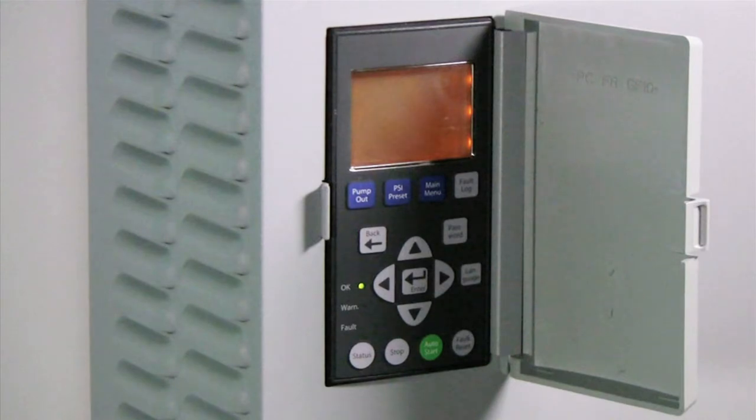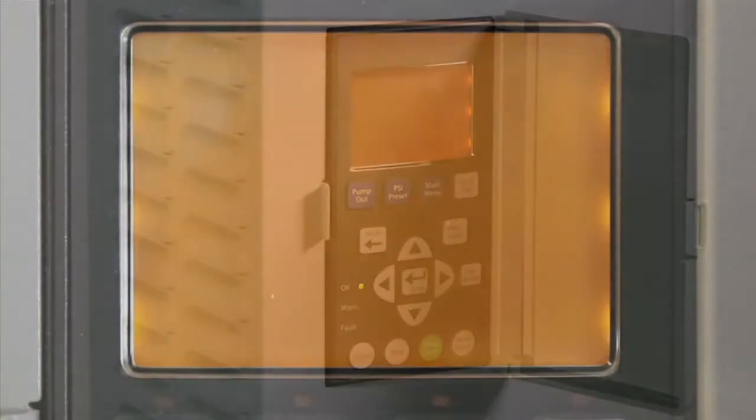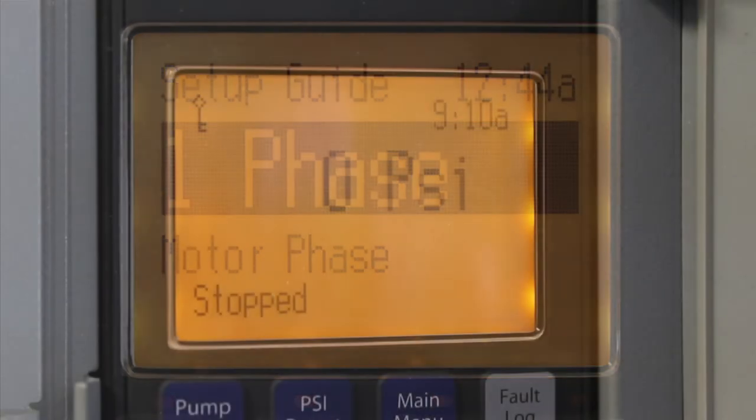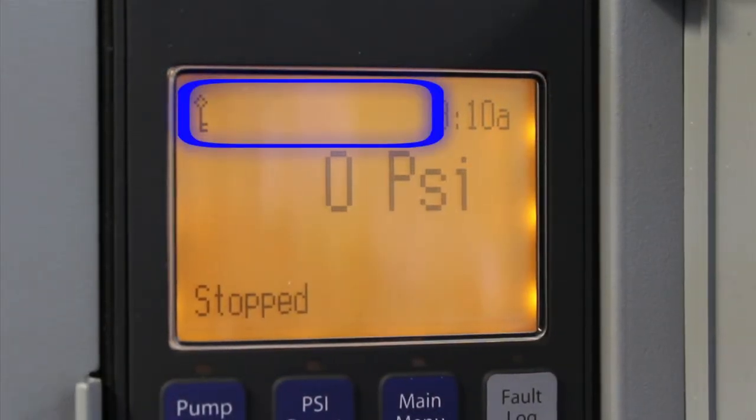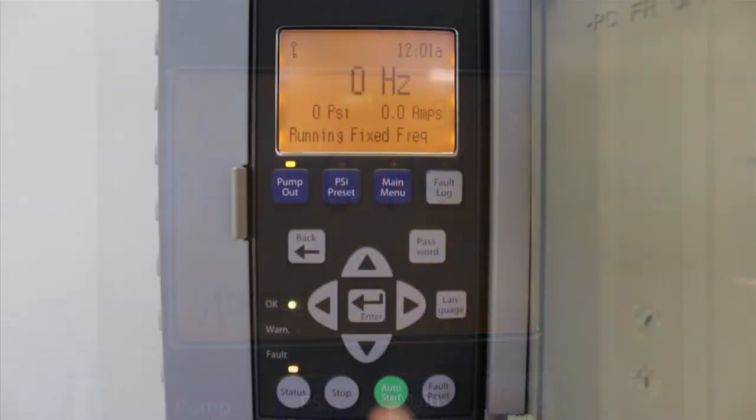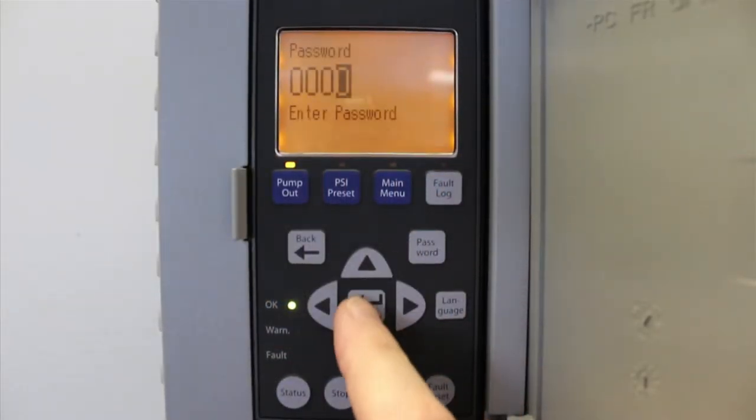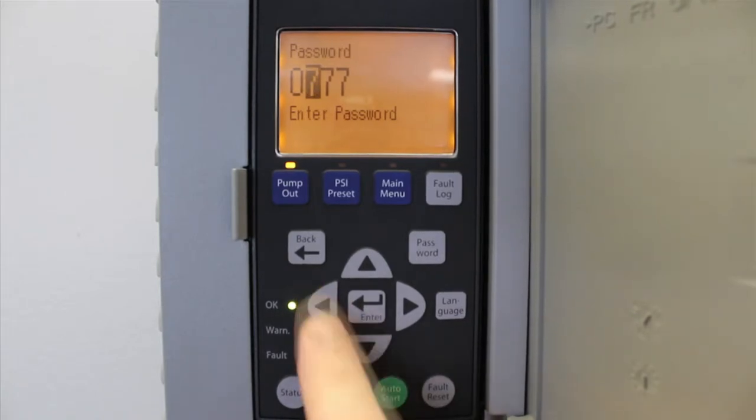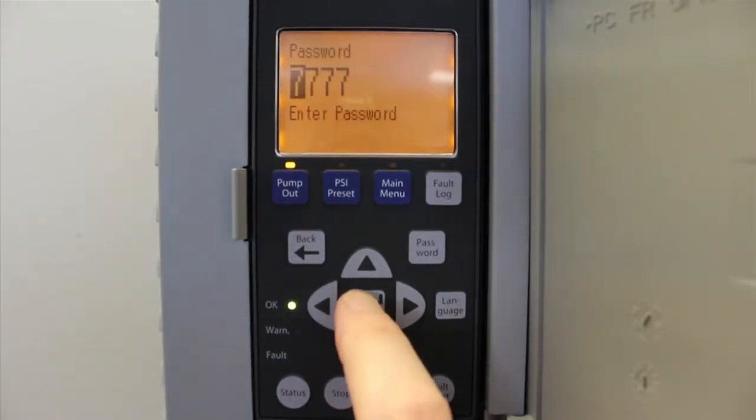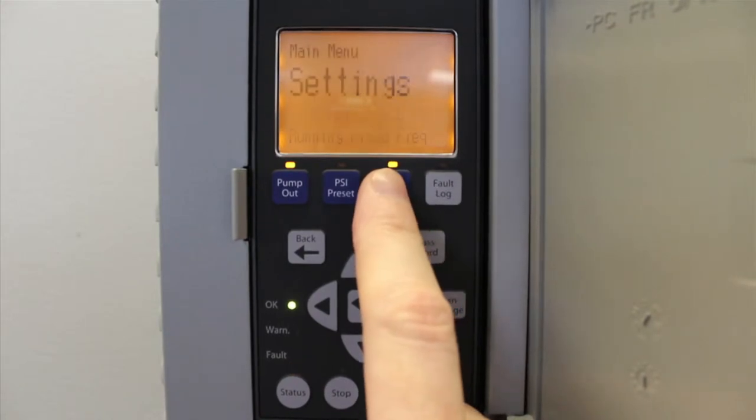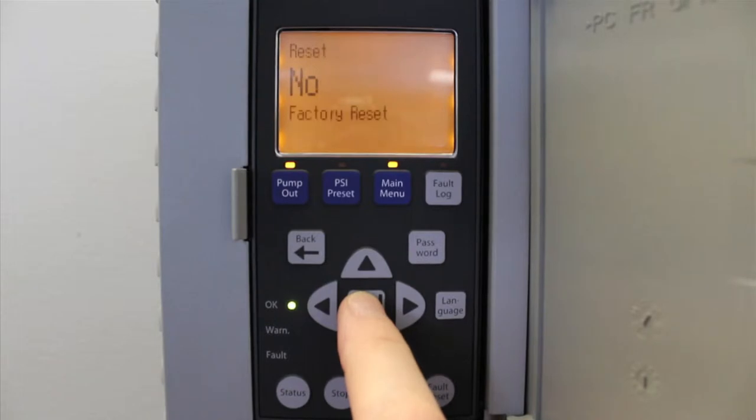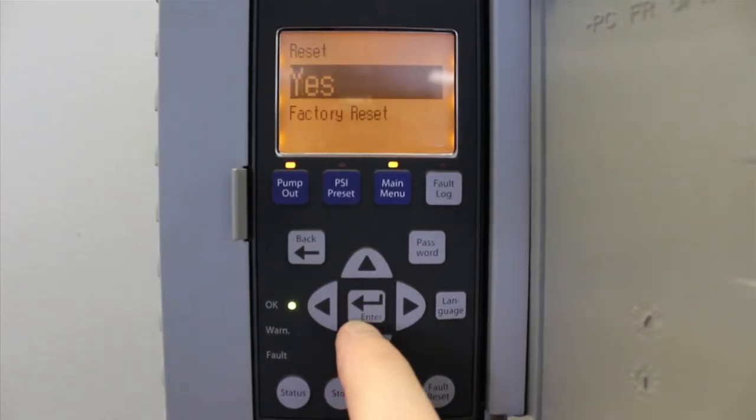We'll start by restoring power to the Pentek IntelliDrive. Once the Pentek IntelliDrive is powered up, the LCD display should read Setup Guide. If it doesn't, press the password button, enter the default password 7777, and press Enter. Press the main menu button. Press the up or down arrow until reset appears, and press Enter to edit. Change No to Yes, and confirm Reset.